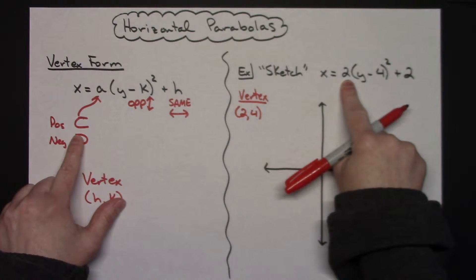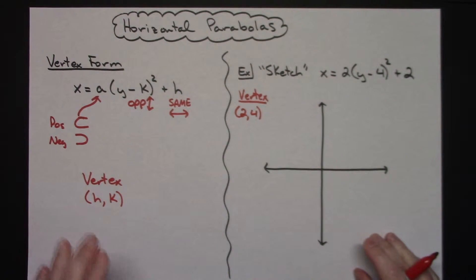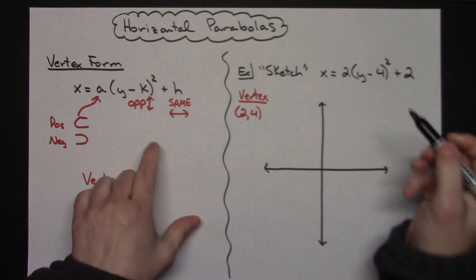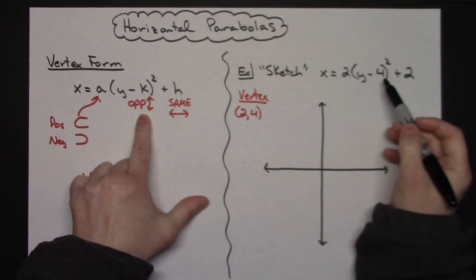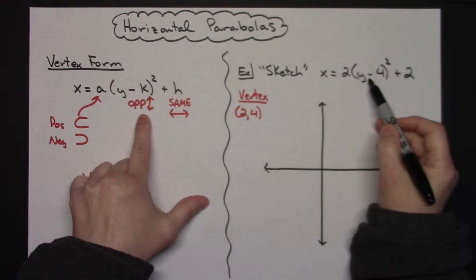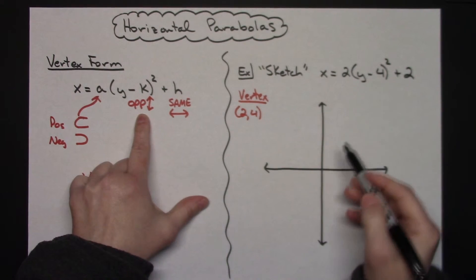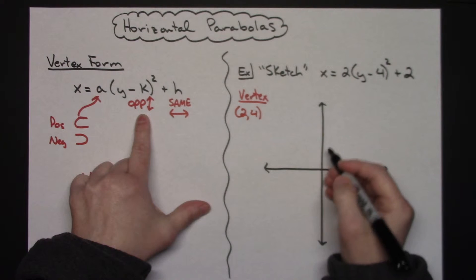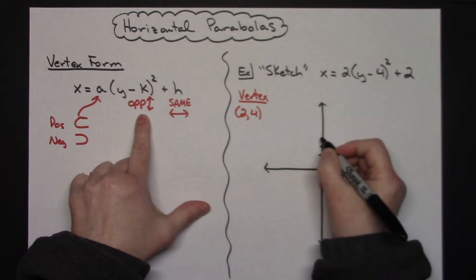And I know because that's positive 2 that it's going to open to the right. However, if I wanted to do this along the lines of shifting, which is usually how I translate all my graphs, then what I'm going to do is I'm going to start at the origin and this negative 4 would tell me to go up 4. So I would shift up 4: 1, 2, 3, 4.